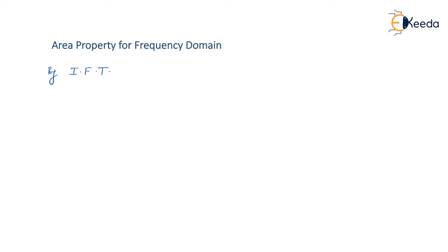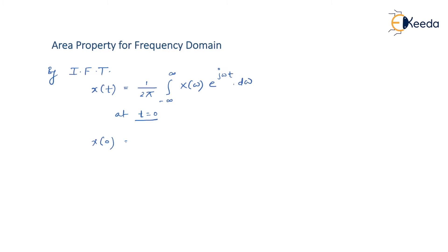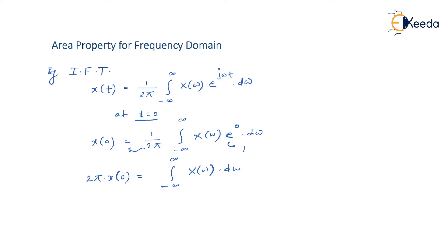By the inverse Fourier transform we get x(t) from X(ω). So x(t) = (1/2π) ∫₋∞^∞ X(ω) e^(jωt) dω. Now at t = 0, x(0) = (1/2π) ∫₋∞^∞ X(ω) e^0 dω. Since e^0 = 1, shifting 2π to the left-hand side gives: 2π · x(0) = ∫₋∞^∞ X(ω) dω.